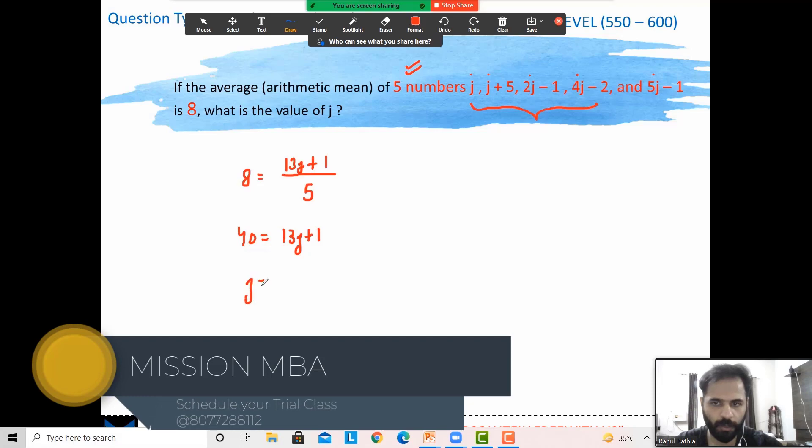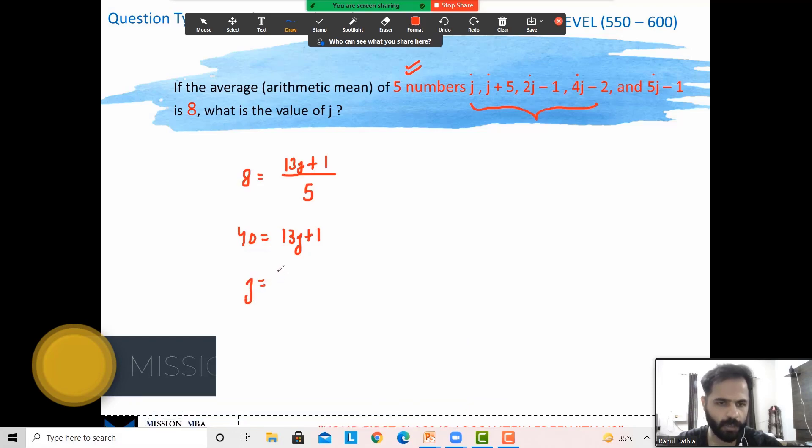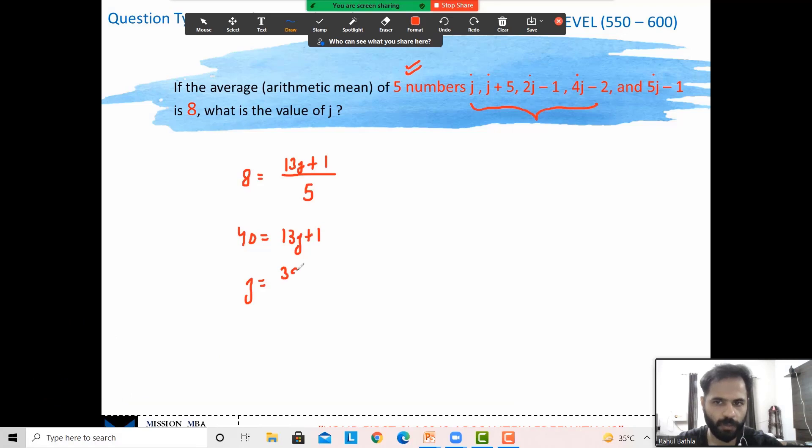From here I can simply solve: 40 equals 13j plus 1, so 39 and divide by 13—it's directly 3. What we are doing for the first time, I will go a little slow, but in the real GMAT, a test taker who is at quant 51 or 50 tends to avoid these kind of steps. So j is clearly 3.